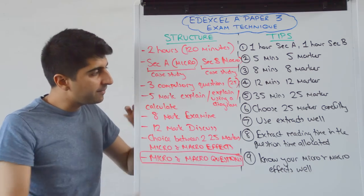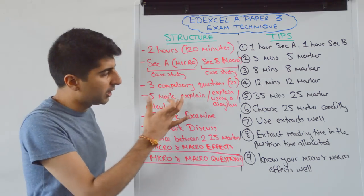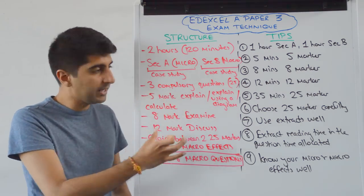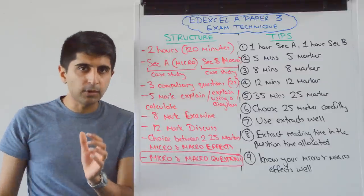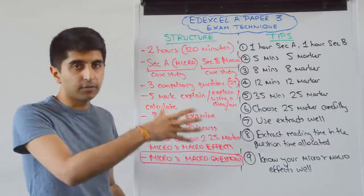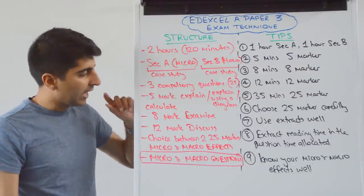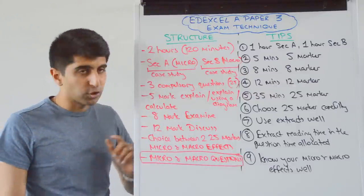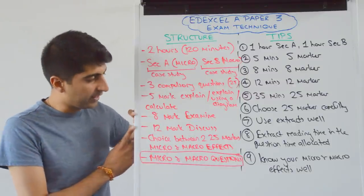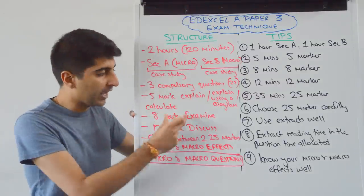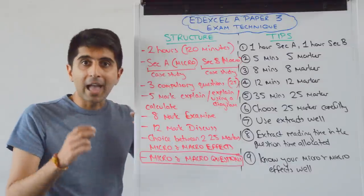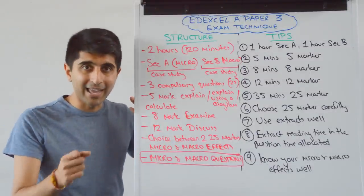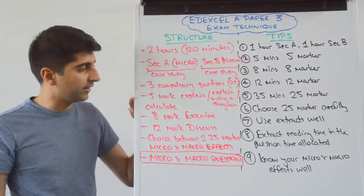There are going to be three compulsory questions in each section. You're going to have a 5-mark explain question — or it could be a 5-mark explain using a diagram, or a 5-mark calculate. Most likely a 5-mark explain question based on something in the extracts. You're going to have an 8-mark examine question and a 12-mark discuss question. For the 8 and the 12, you need evaluation — KAA points and evaluation — whereas the 5-marker is just KAA, no evaluation necessary.